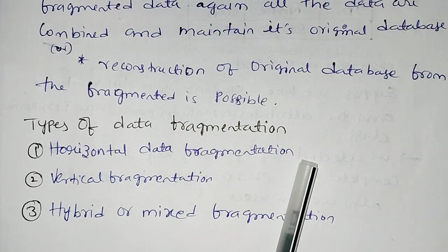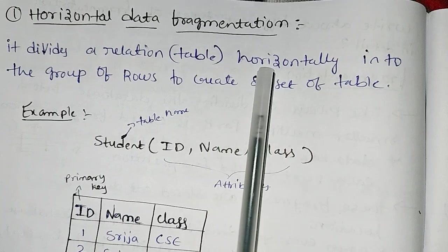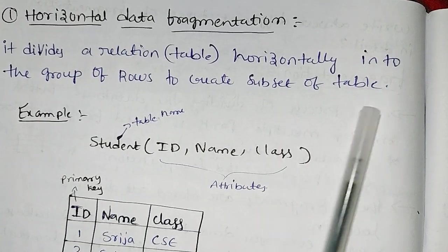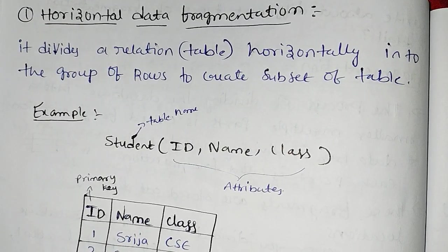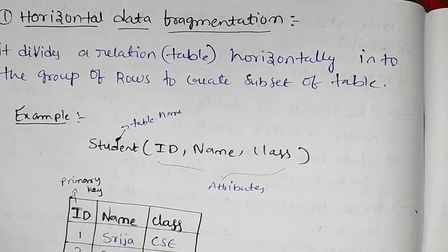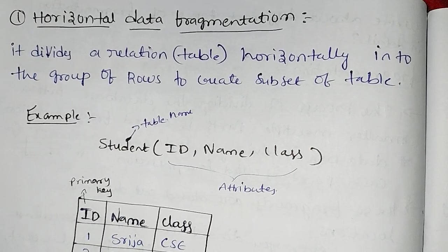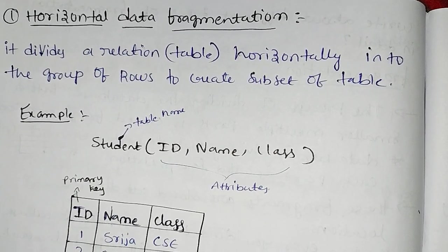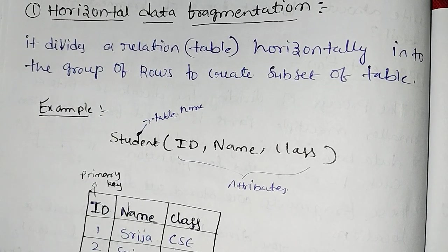First: horizontal data fragmentation. Horizontal data fragmentation divides a relation table horizontally into a group of rows to create a subset of the table. We are going to divide the table by rows — columns are not divided, only rows. We do a row grouping and create a subset of the table.